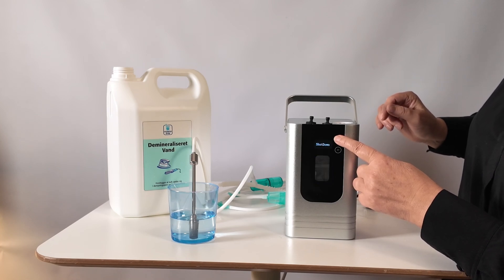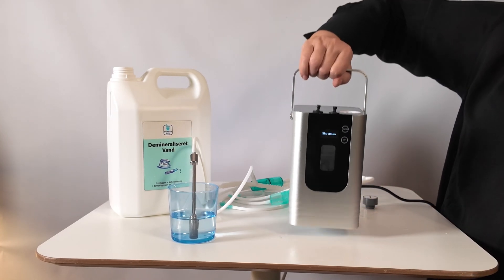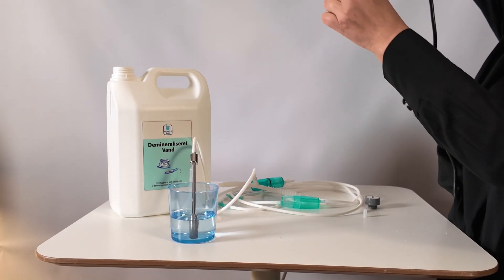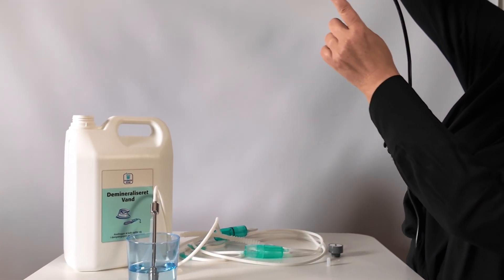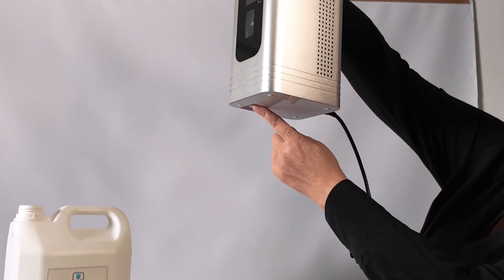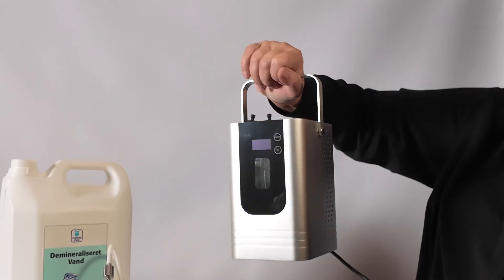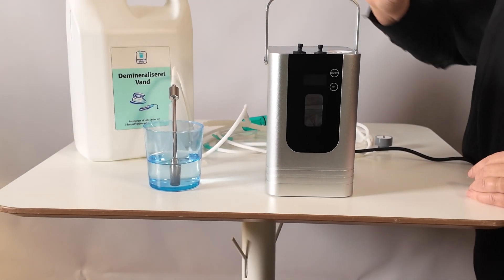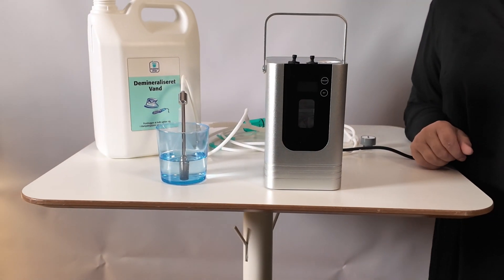And you switch off. In the bottom there's an outlet you can screw, and then it's easy to empty the hydrogen machine of water and refill with new and fresh water.